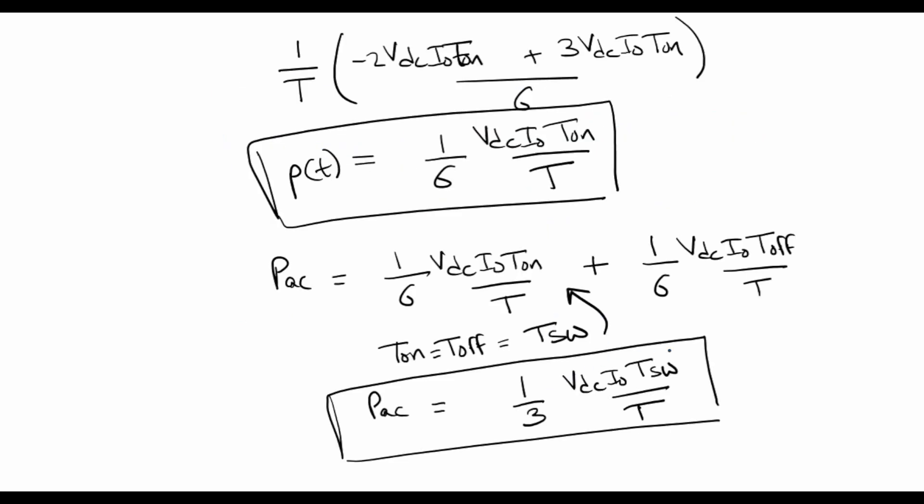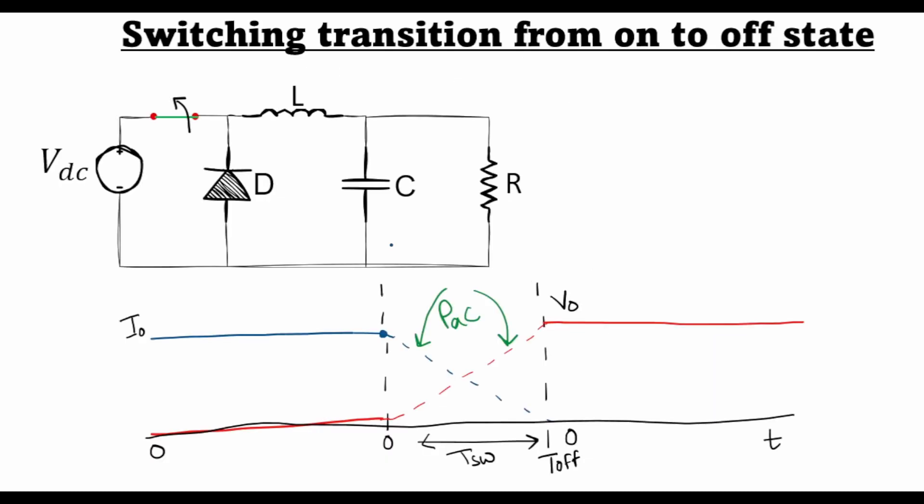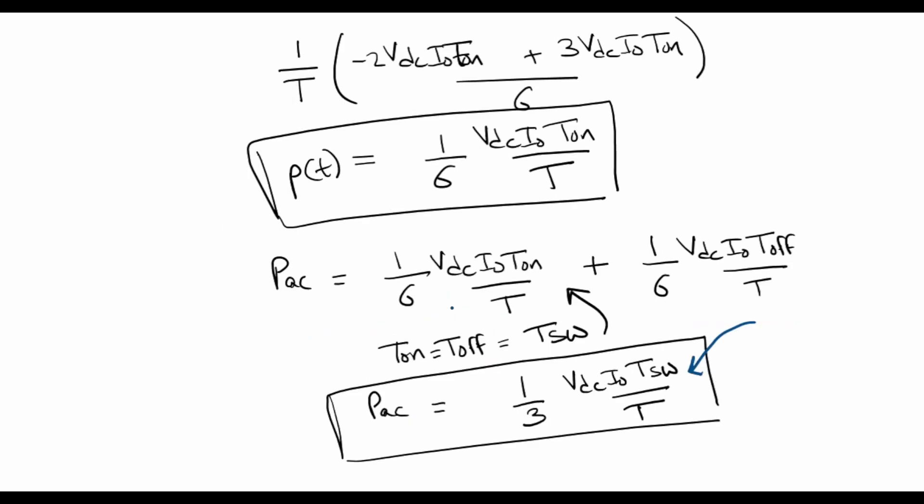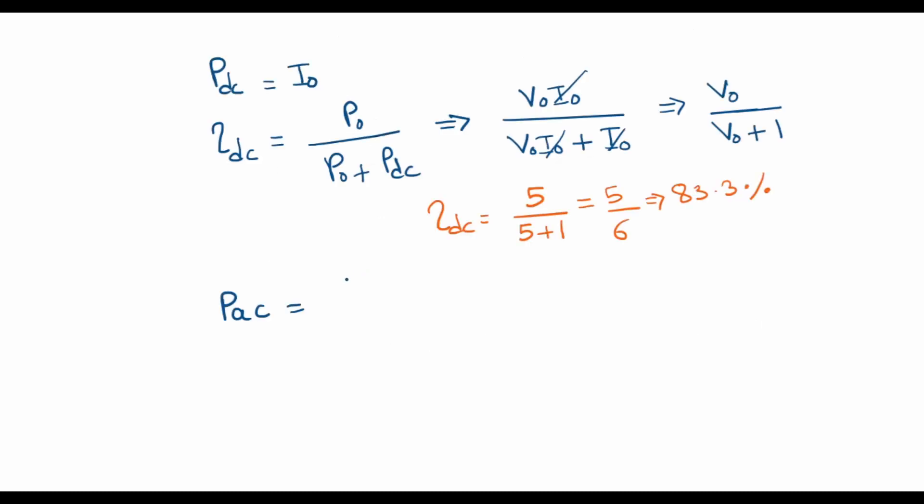So the final expression that I derived for the AC switching loss, which arises due to this transition during T off as well as T on of the power transistor. This expression I derived as 1 by 3 VDC times I0 times TS divided by T. So let's copy that expression here.